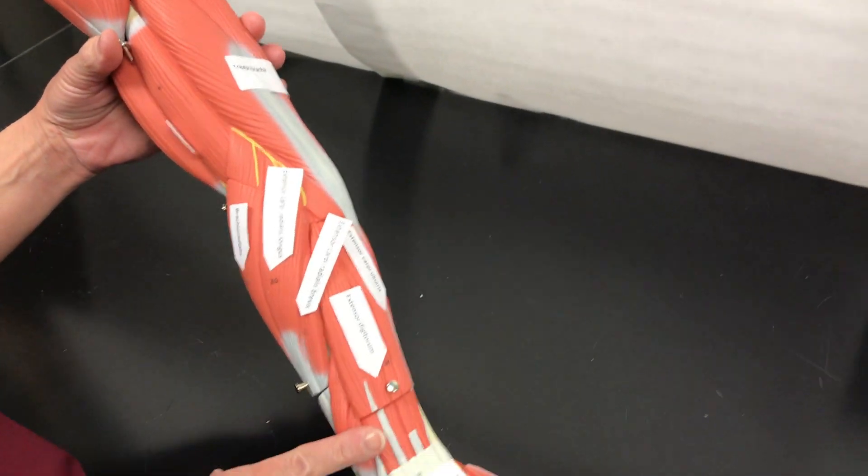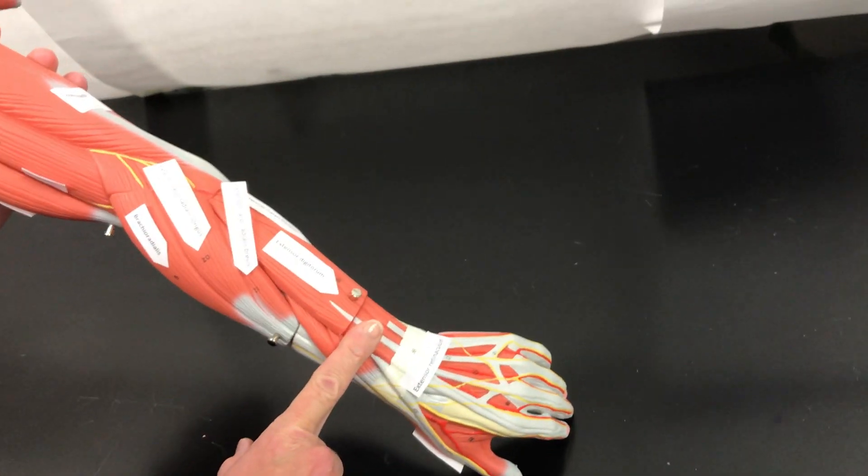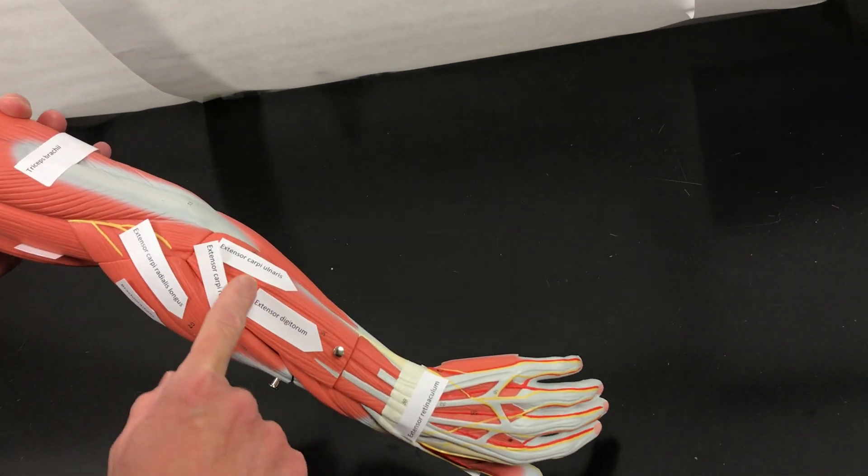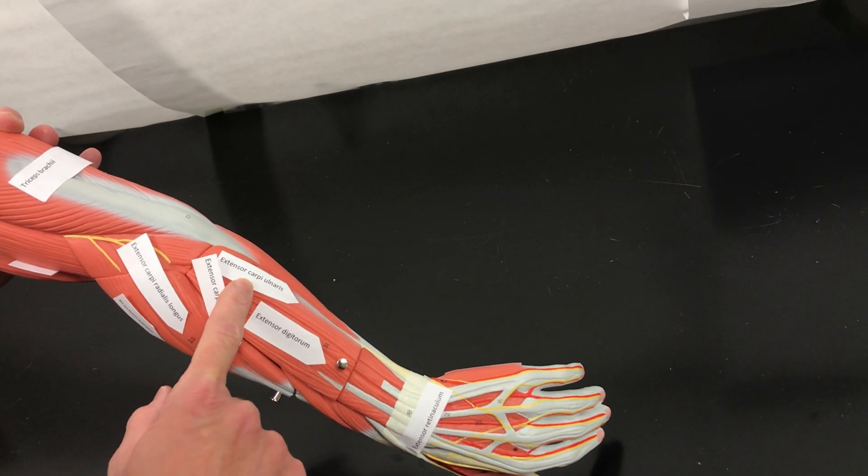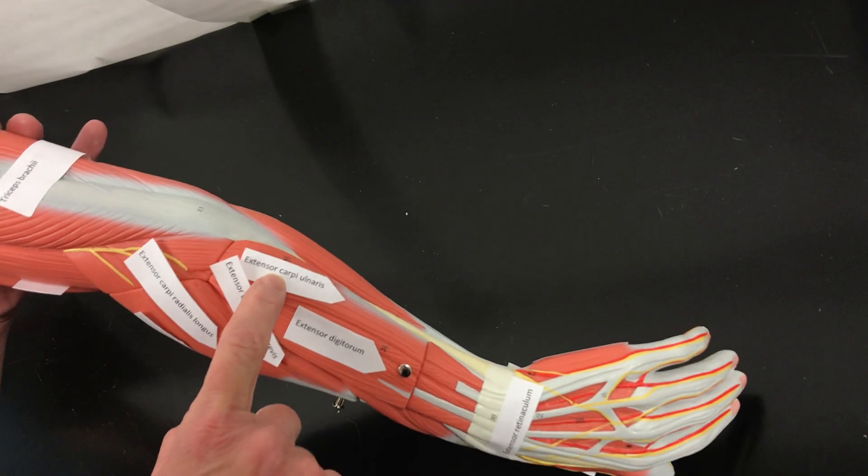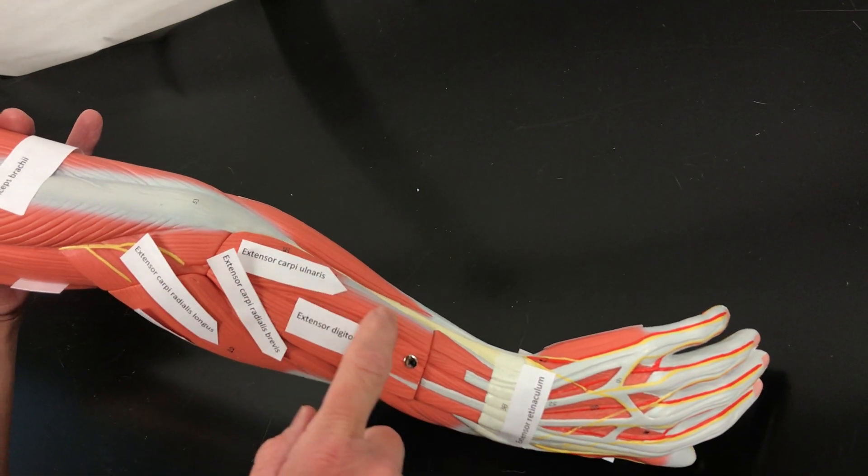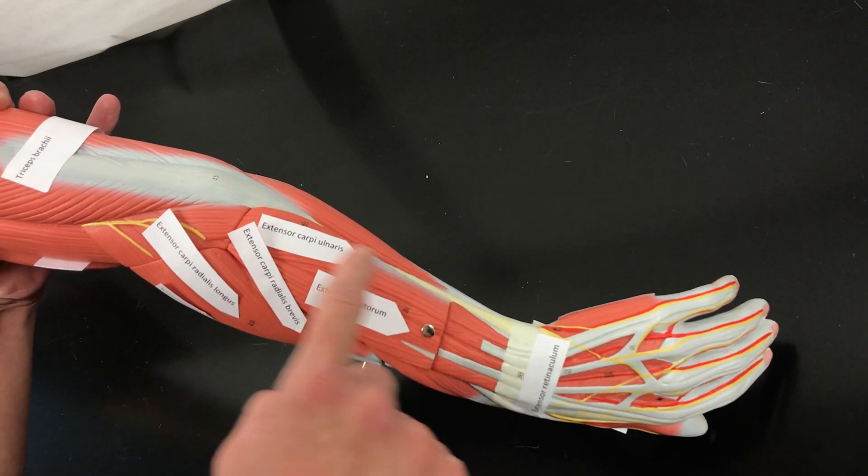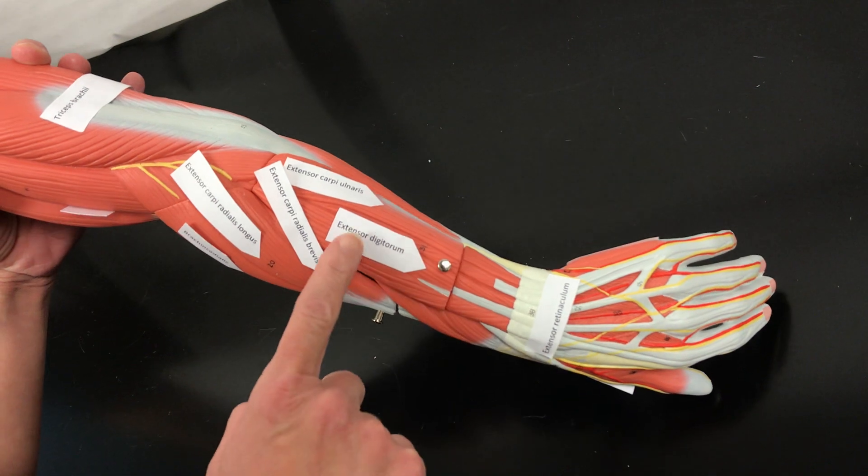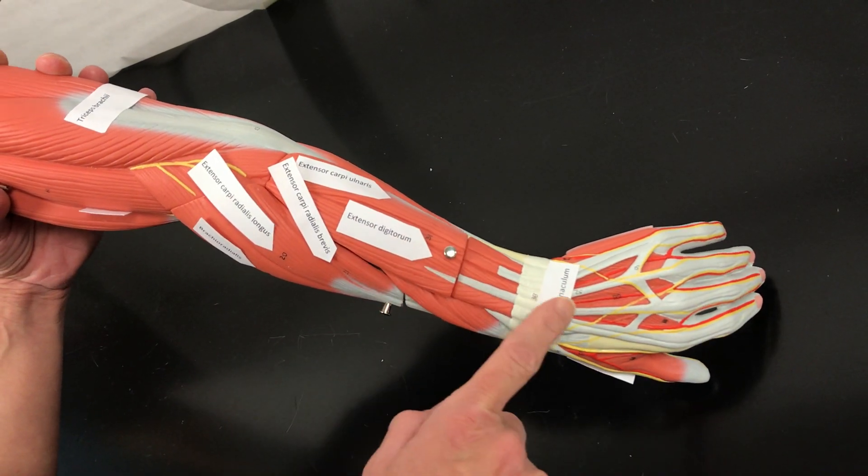On the forearm we have the extensors on the top. These are named for what they do and location. We have the extensor carpi ulnaris. It's on the ulna side. We have the extensor digitorum, it extends the digits.